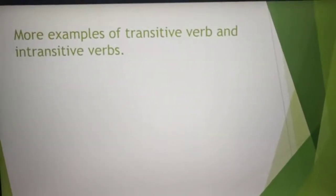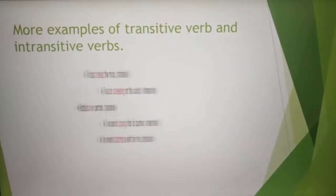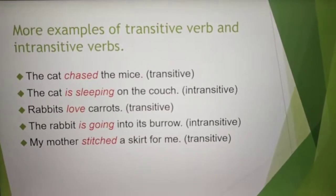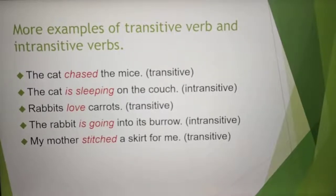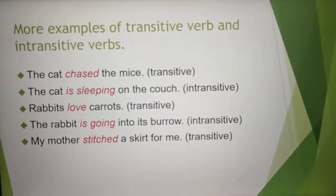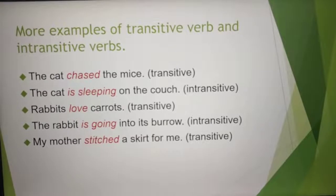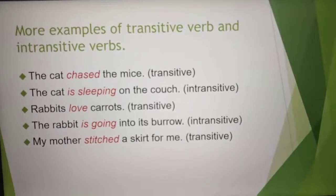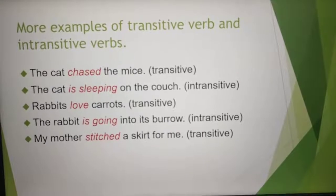Let's do more examples of transitive and intransitive verbs. 'The cat chased the mice' — it is a transitive verb. Why? Because if I had said 'the cat chased' — chased who? The mice. So it needs an object to complete its sentence.